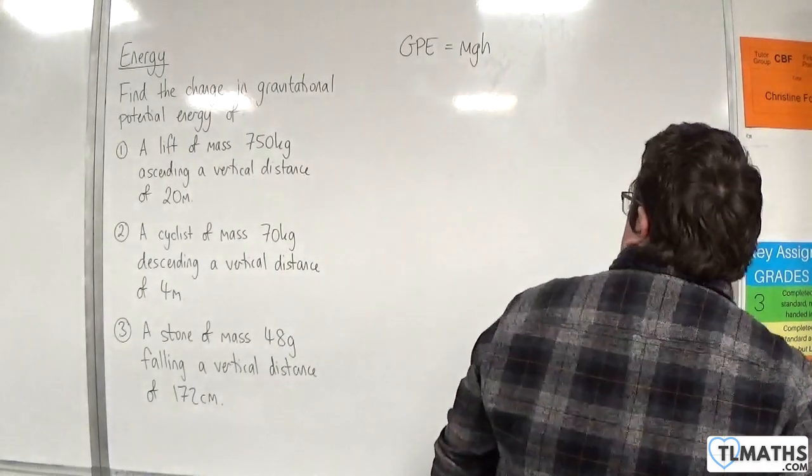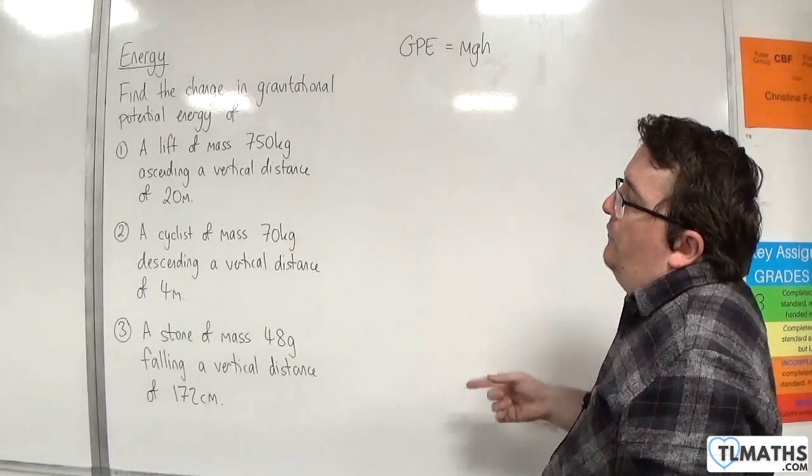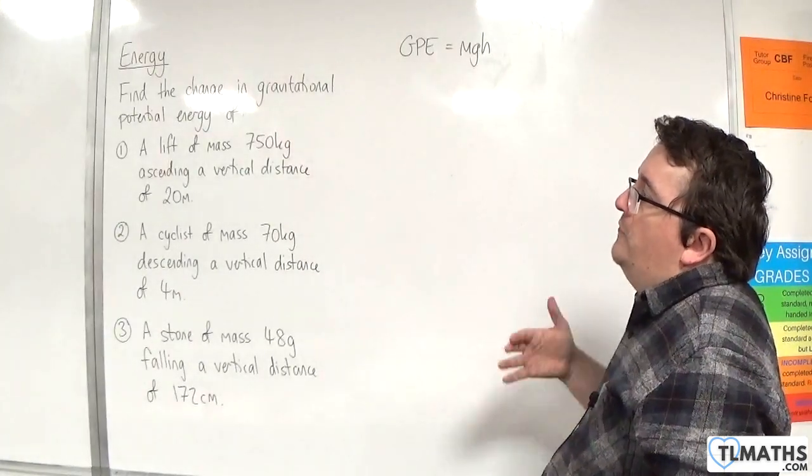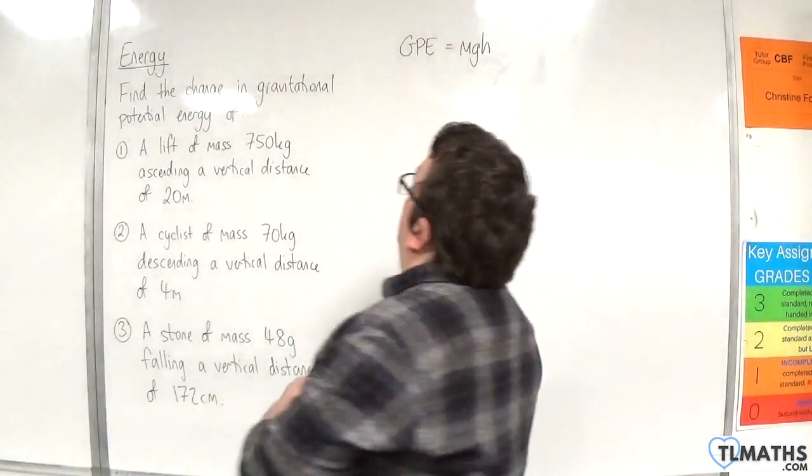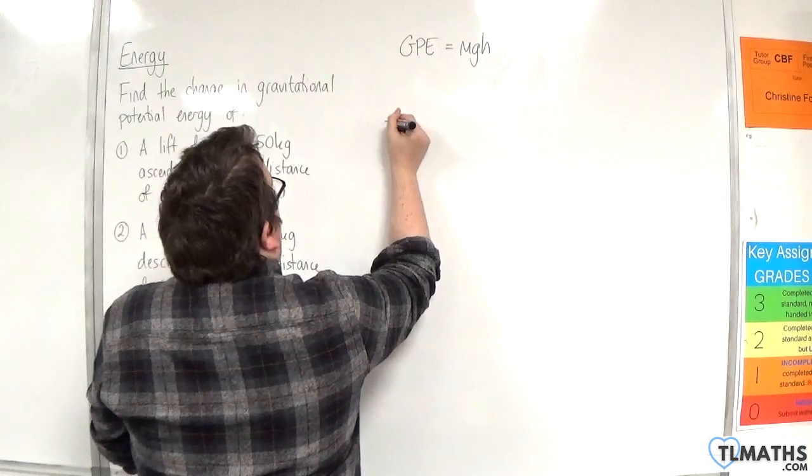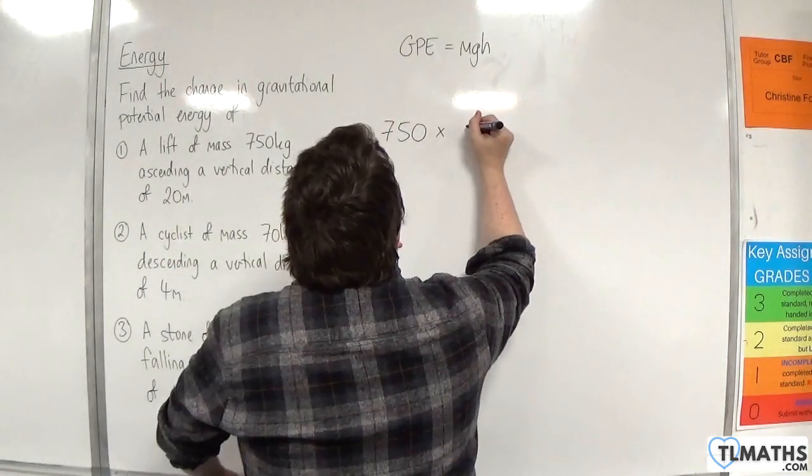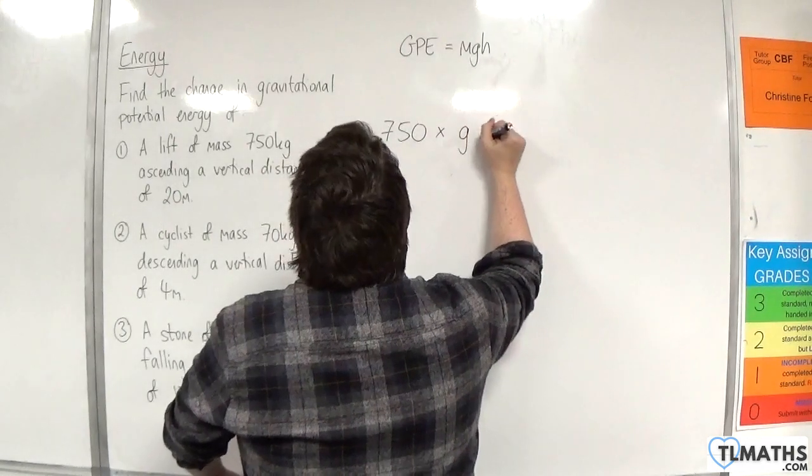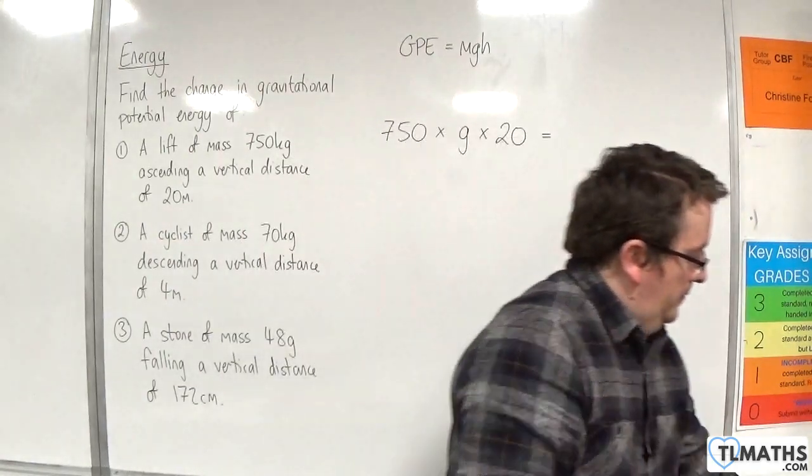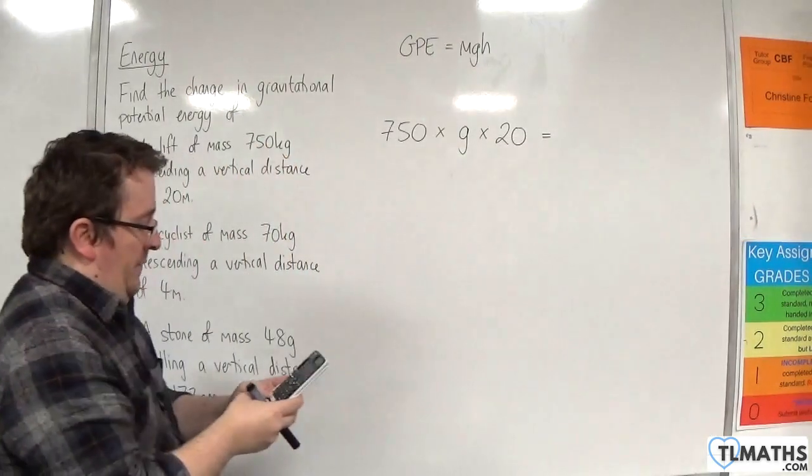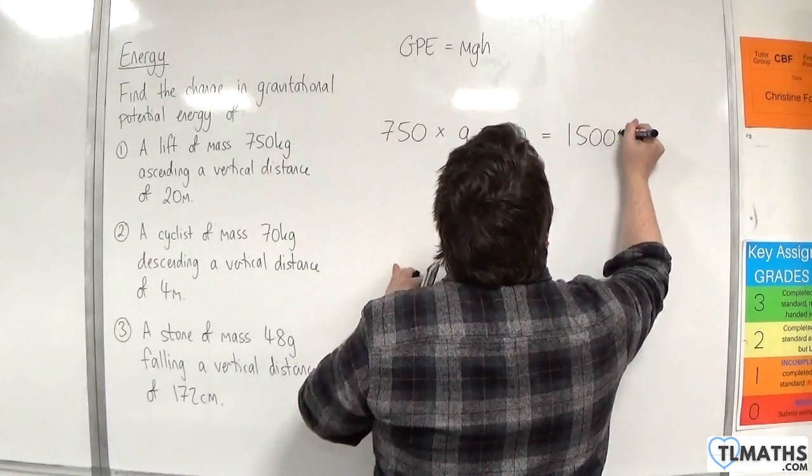So let's take a look at the first problem that we've got here. A lift of mass 750 kilos ascending a vertical distance of 20 meters. So it would be the mass 750 times by G times by H, which is 20. So 750 times 20, so 15,000 and that's G.